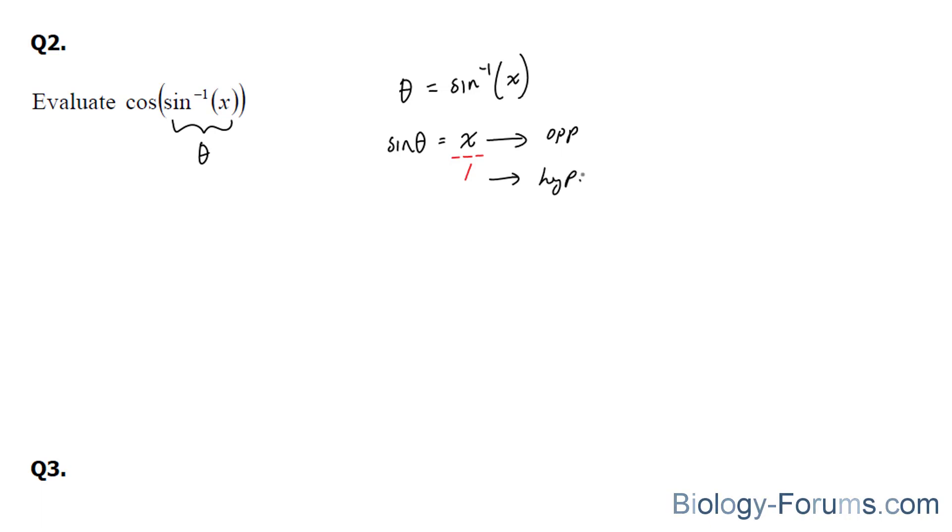So once again, I'm going to create a triangle, a right triangle, using these dimensions where this is theta, the opposite is x, and this one right here represents the hypotenuse. And we can find this side using Pythagorean's Theorem, and I do have a video dedicated on the Pythagorean's Theorem. And you would find out that it is 1 minus x squared square rooted.